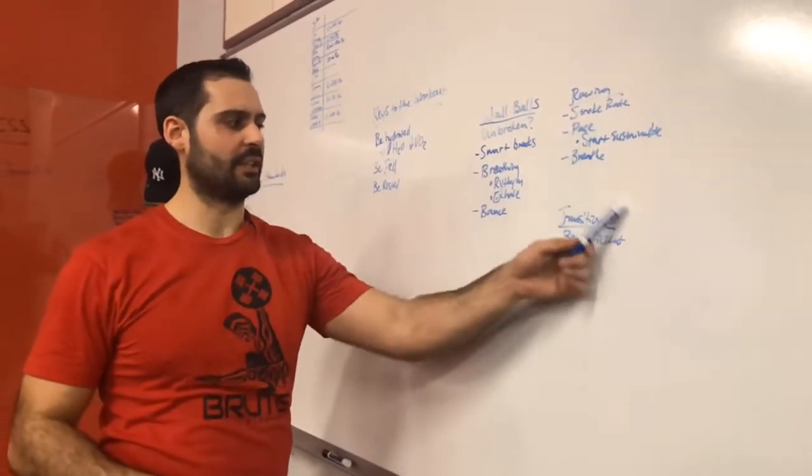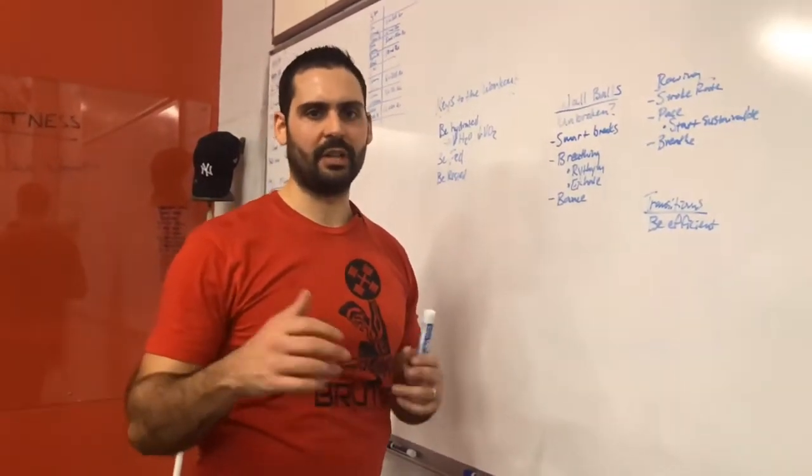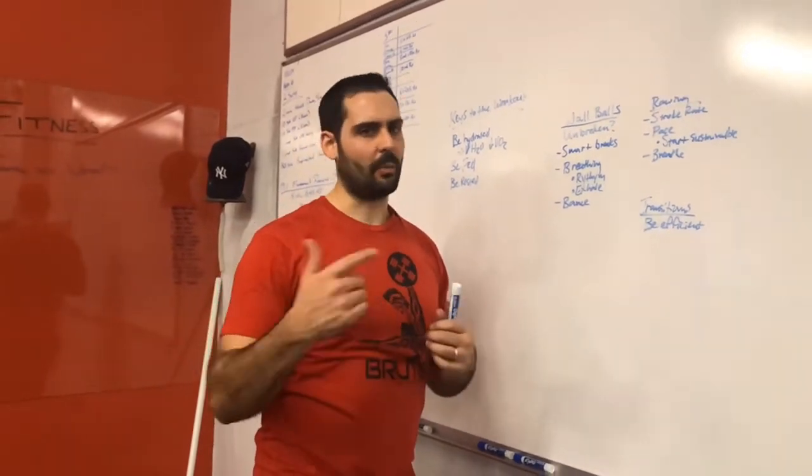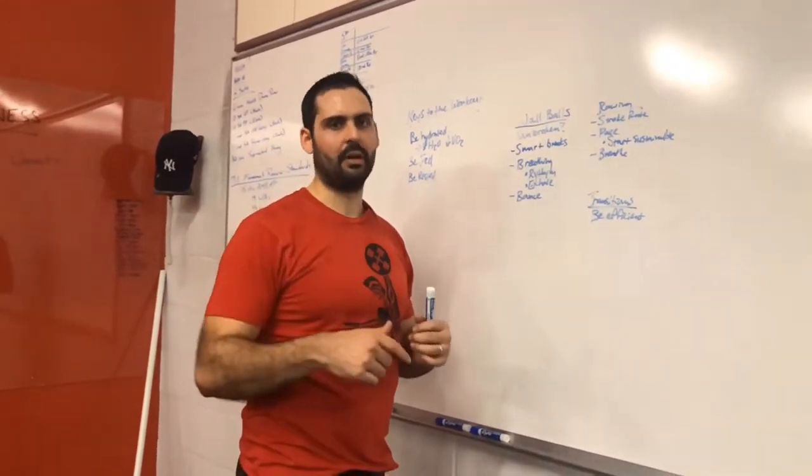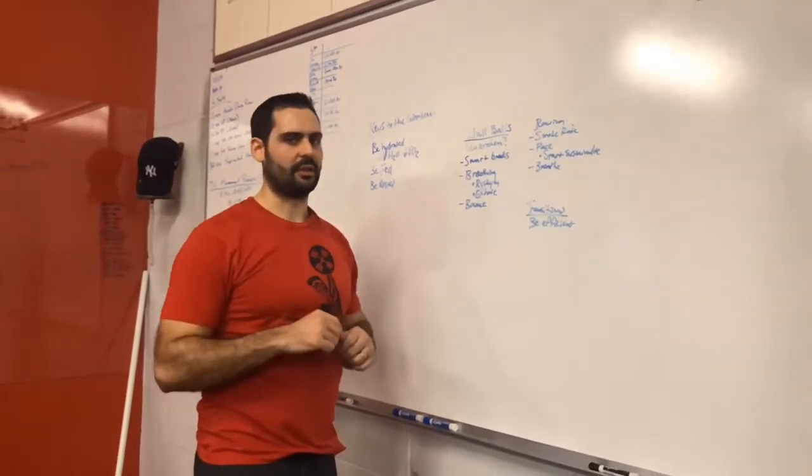The last little thing is just transitions. We're going to set it up in here so you're rather efficient. Just make sure that you're communicating with your judge if you want them to strap you in, and just go back and forth. Get off the row, get on the ball. As soon as the ball gets down, get on the row, start accumulating reps, and start to increase from there.